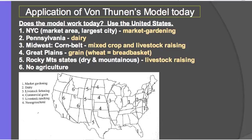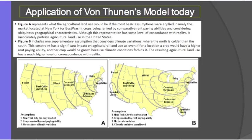Here's another diagram that looks at the model, making the same assumption that New York area would be your vegetable and market center. You can see for A and B: A assumes again that New York City is the only market, that crops are ranked by rent-paying ability, and the closer you are to New York City the higher the cost of the land, and that there's no terrain or climatic variation — meaning it's all consistent — which we know is not always going to be true. So you can look at these to consider other thoughts about applying Von Thunen's model today.